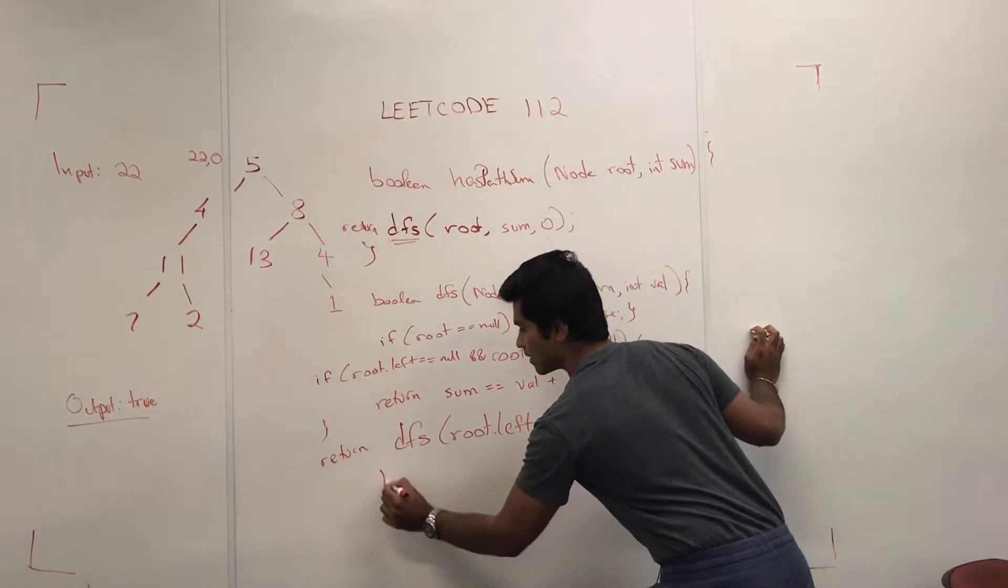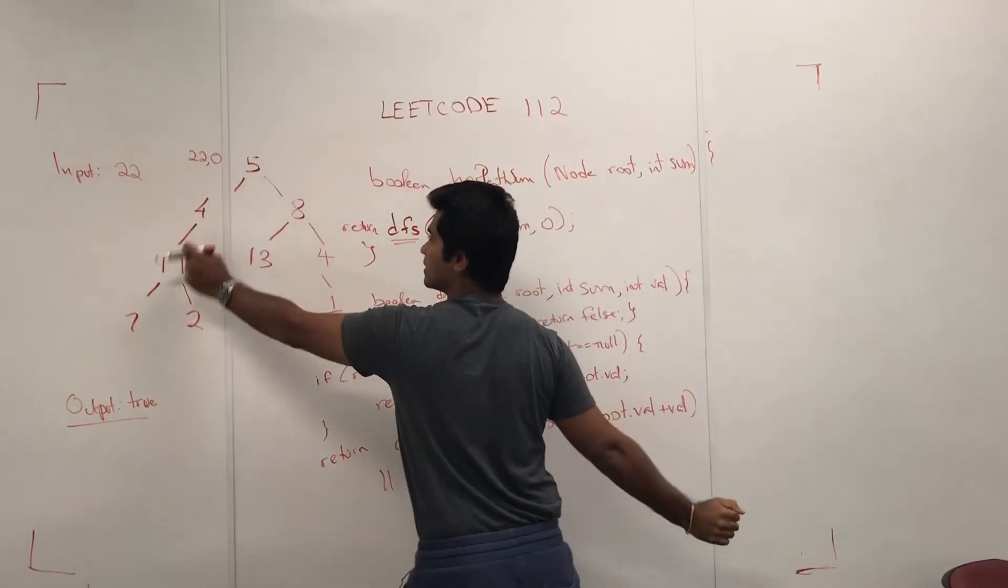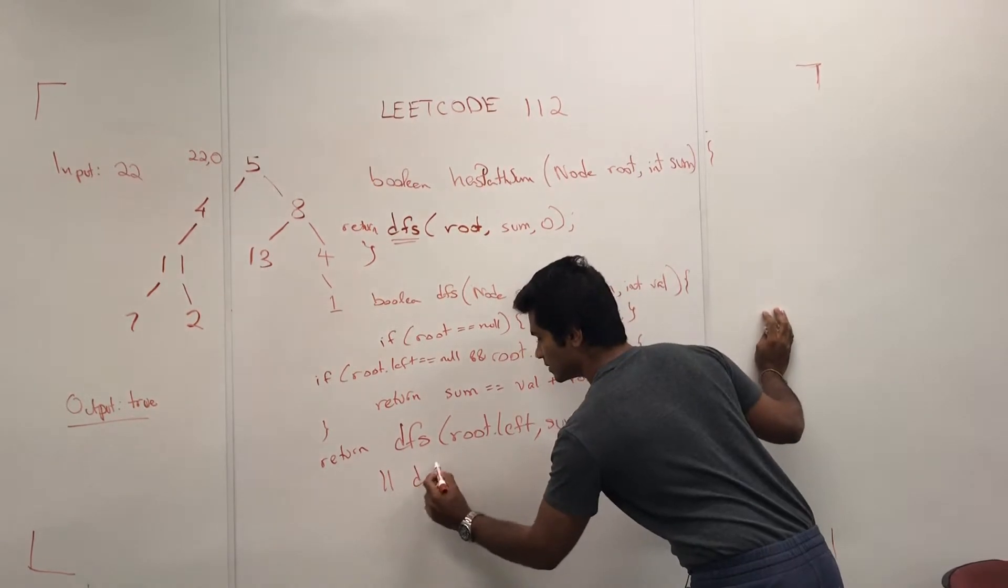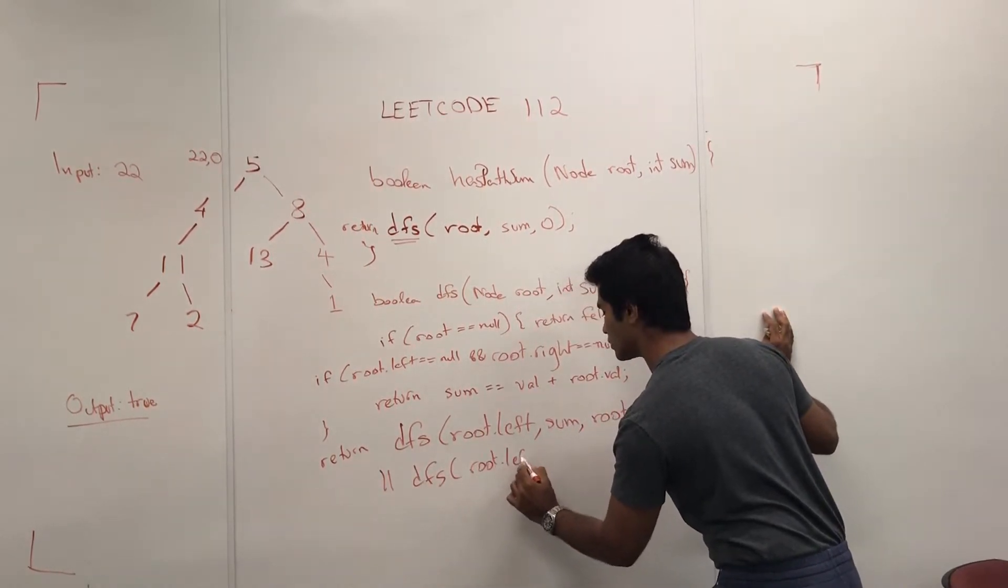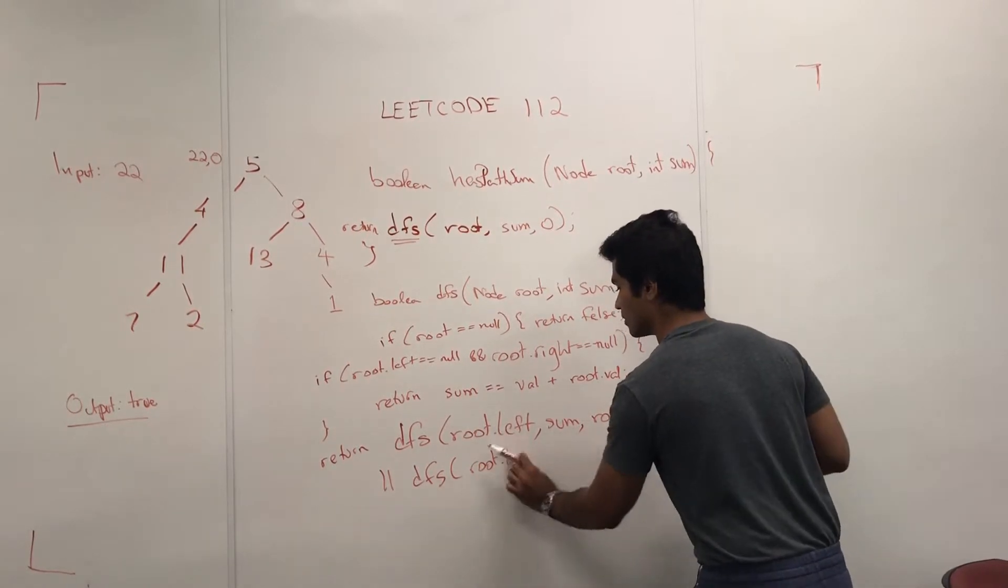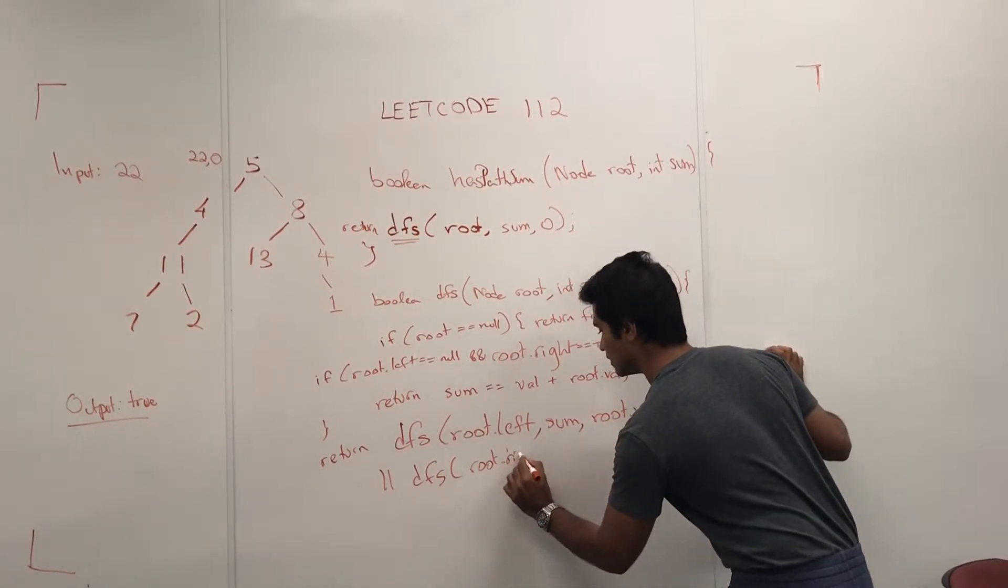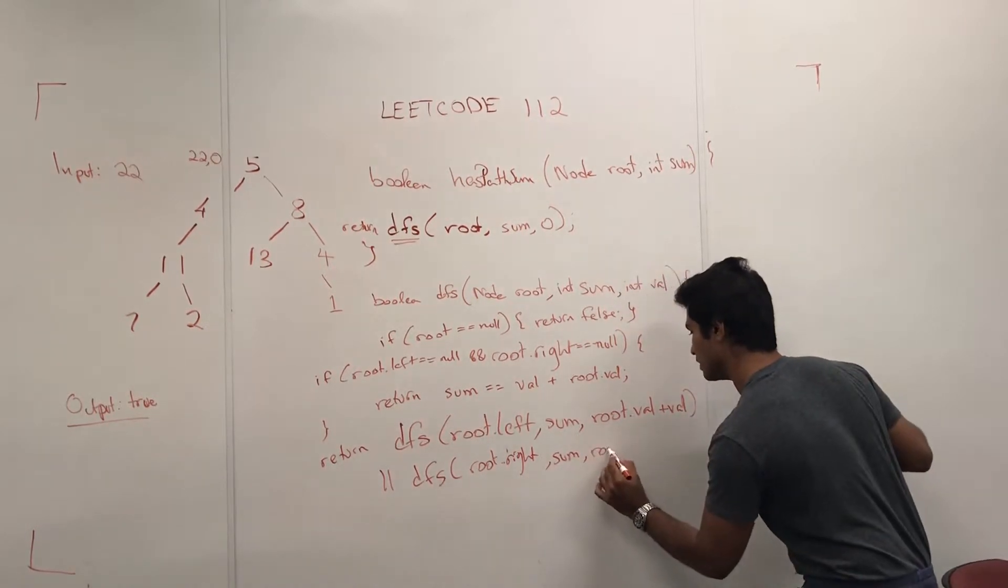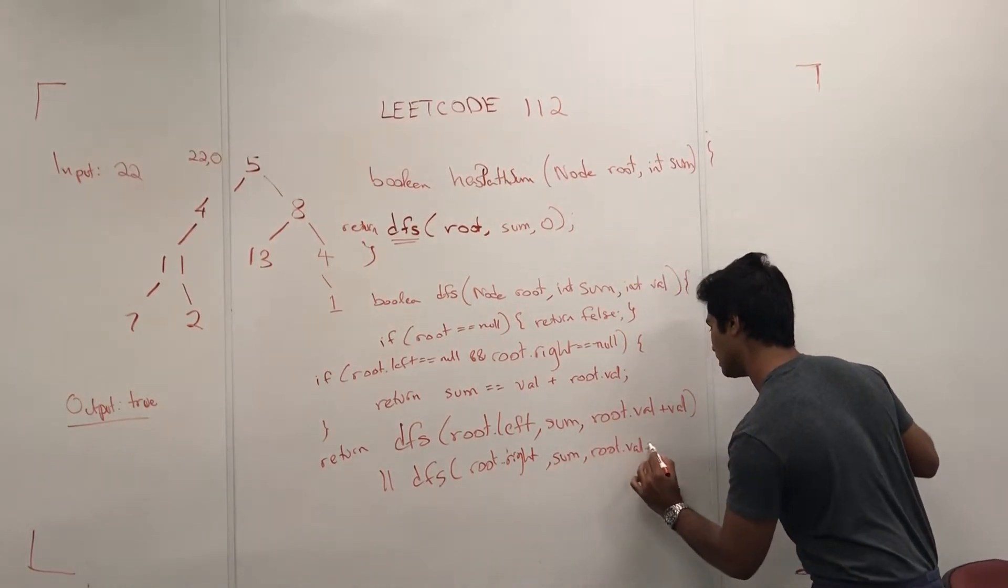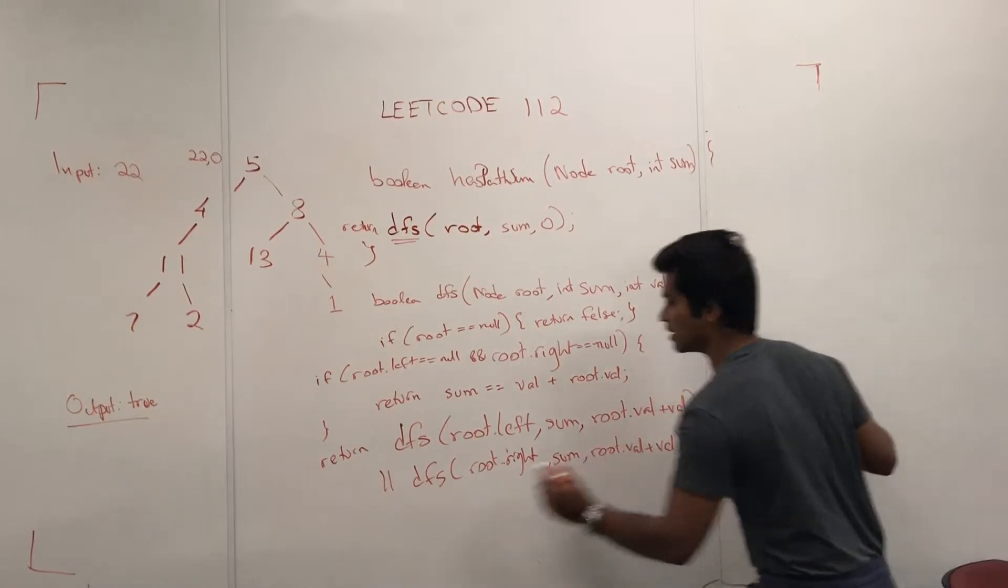Or, because they want just one path down, we have to see if either the left side or the right side completes our Boolean true. So if that's the left side, and then we have the right side, sum, and then root.val plus val that's passed in.